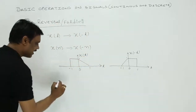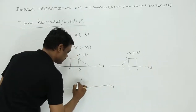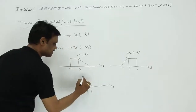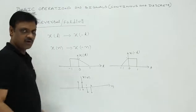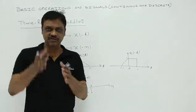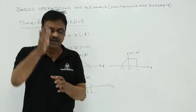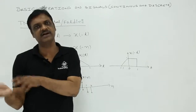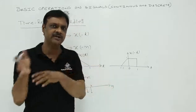For example, x of n is a signal. Suppose this is x of n. I want to get x of minus n. Then how do you get x of minus n? You just fold the signal, whether it is a signal or sequence, continuous time or discrete time. You just fold the signal, so whatever the signal is there on the right side will appear at the left side, and whatever the signal on the left side will appear at the right side.